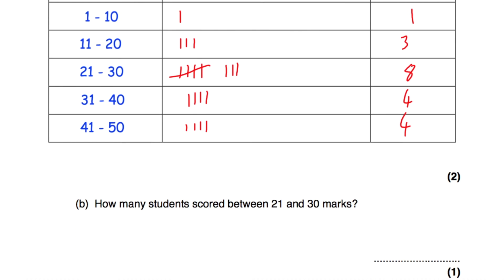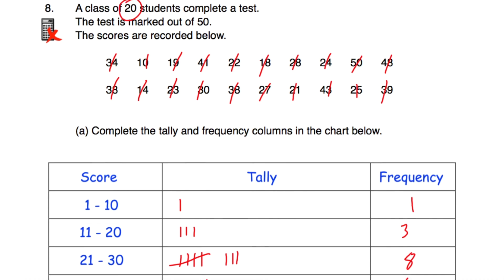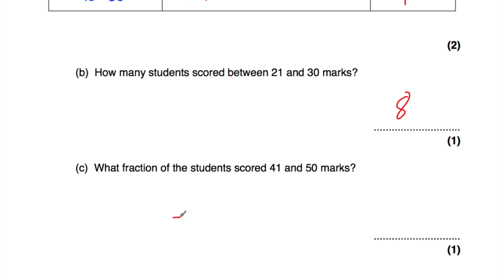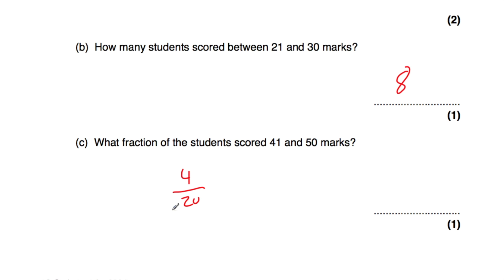Part B: how many students scored between 21 and 30 marks? That's this category, and 8 students scored between 21 and 30 marks inclusive. Part C: what fraction of students scored between 41 and 50 marks? There are 20 students altogether — you can verify: 1 plus 3 is 4, plus 8 is 12, plus 4 is 16, plus 4 is 20. Four students scored between 41 and 50, so that's four twentieths, which simplifies to one fifth.